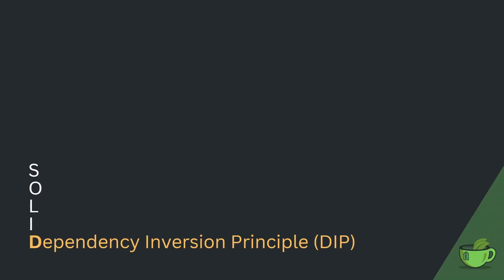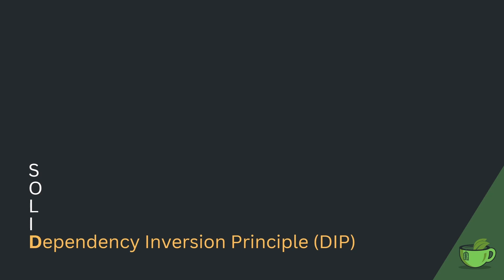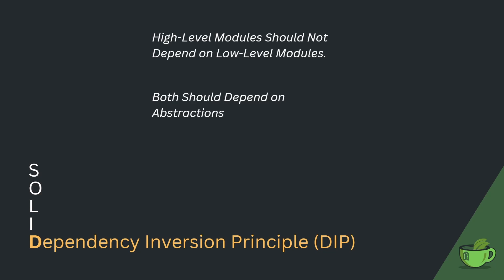The D in SOLID stands for Dependency Inversion Principle. There are three main recommendations. Number one: high-level modules should not depend on low-level modules. Number two: both high and low-level modules should depend on abstractions instead. Number three — the most important but least understood — abstractions should not depend on details. What is crucial to understand is that 'details' often means implementations of low-level modules. Dependency inversion only works when the high-level modules own the abstractions.